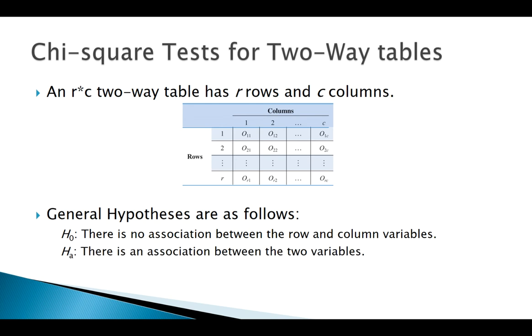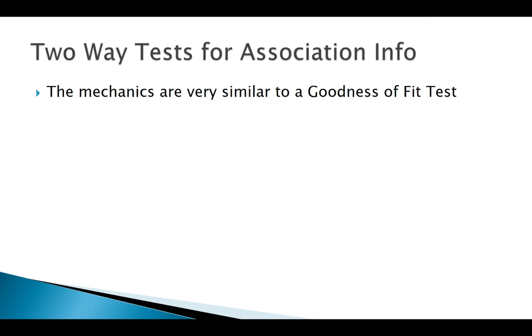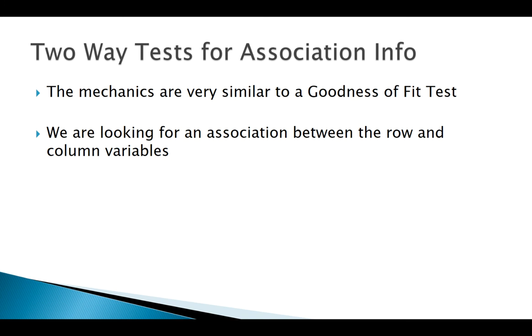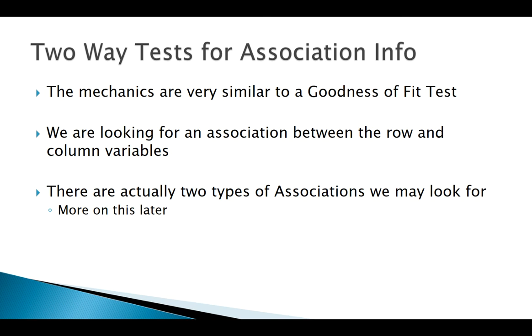If you've done a goodness of fit test before, the mechanics are very similar. If you're already familiar with the chi-squared distribution, this should look familiar. But remember, we are answering a different question – we're looking for an association between two variables. We'll actually see that there are two different types of associations we may look for, but let's just get the basics down first.